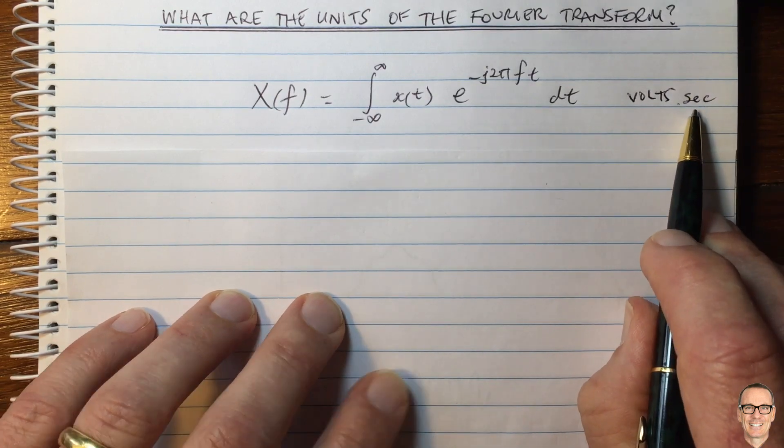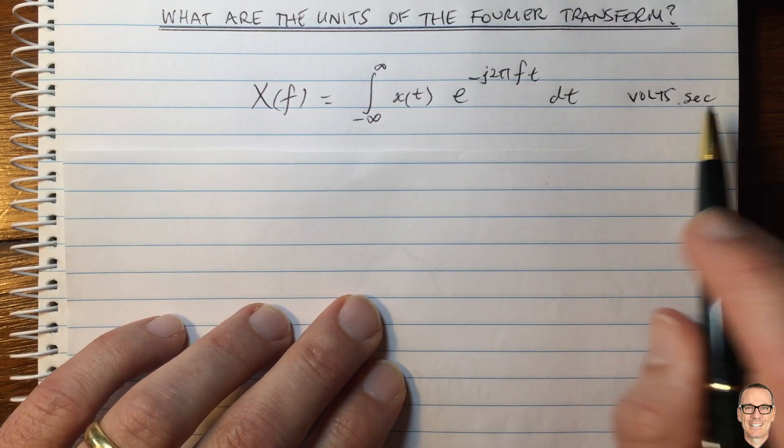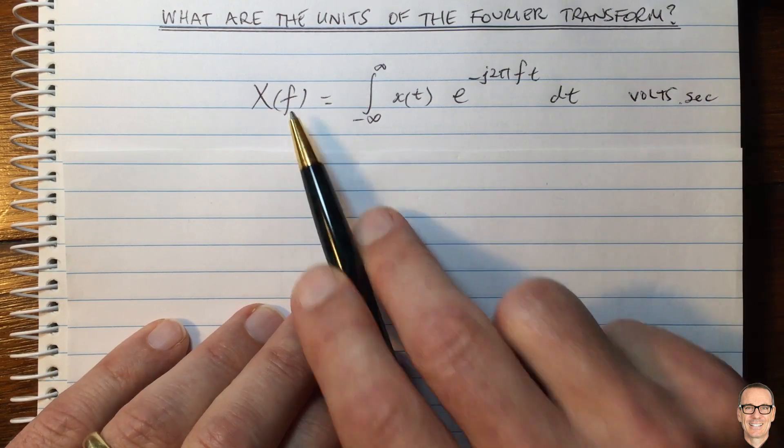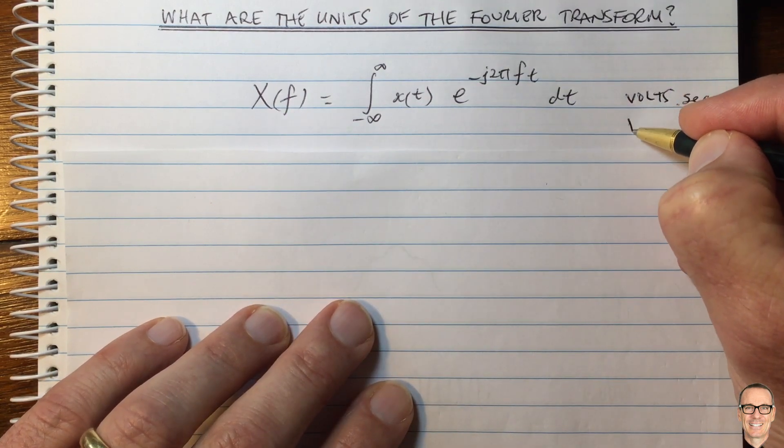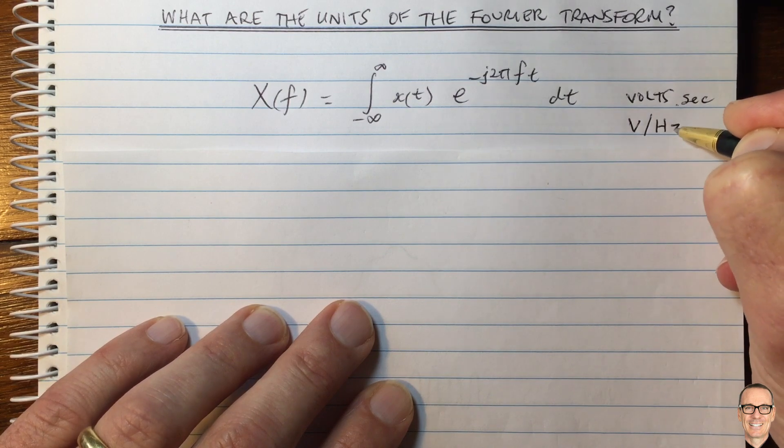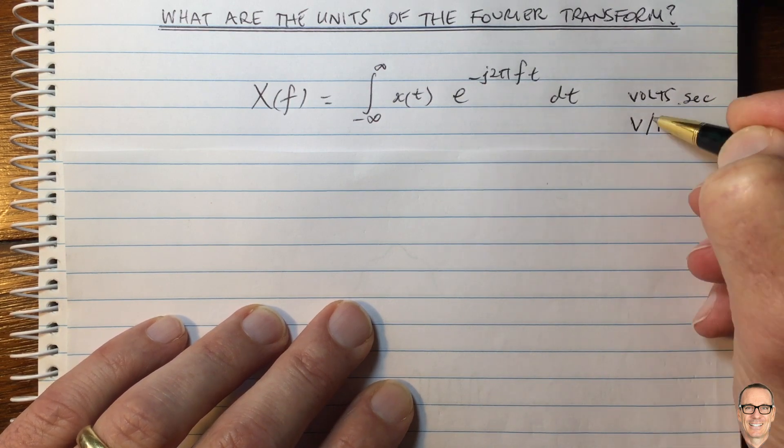And seconds is, in fact, 1 divided by hertz, because we're thinking of the frequency domain. So actually, it's volts per hertz. And I don't know if you've ever thought about that before.